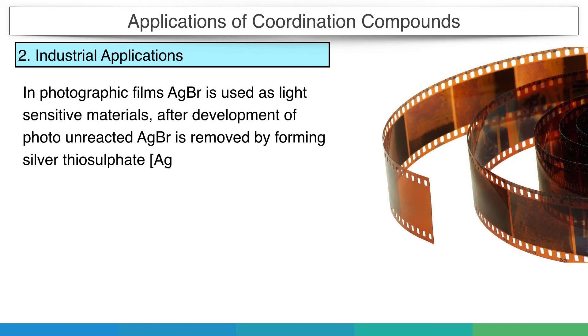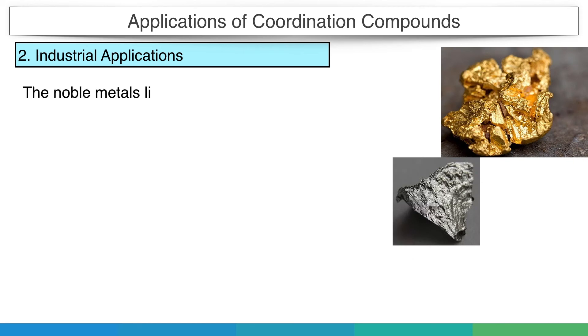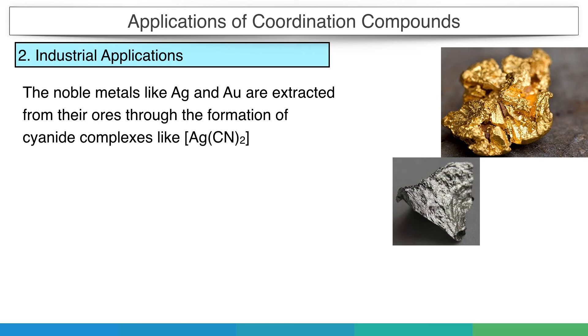The noble metals like silver and gold are extracted from their ores through the formation of cyanide complexes like dicyano-argentate and tetracyano-aurate respectively.